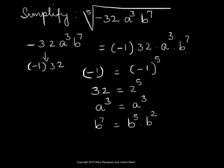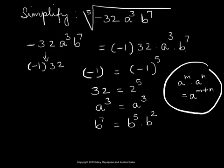Recall that a to the m times a to the n is same as a to the m plus n. Then, based on that rule, you can see b to the fifth power times b to the second power would be b to the 5 plus 2, which is b to the 7.